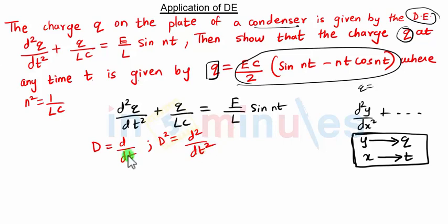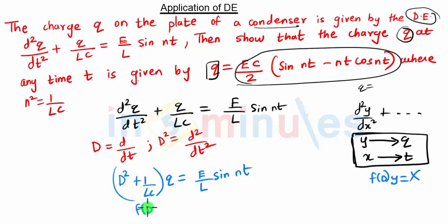So we substitute these in our given equation. We get (D² + 1/LC)q = E/L sin(nt). Earlier we used to have a function f(D)y = x. Here this equation is similar. This is our f(D) times q. Instead of y we have q equal to some function of t.